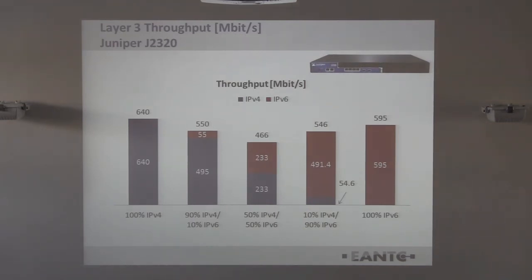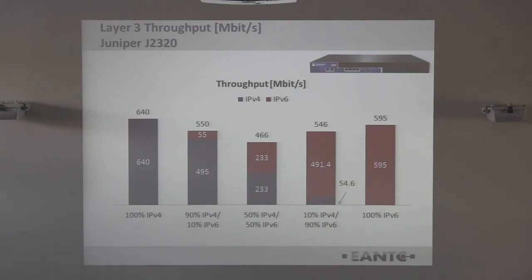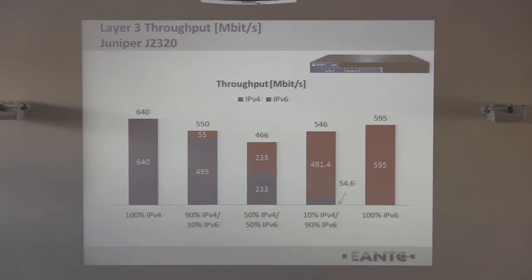Juniper behaved differently. The difference between 100% IPv6 and 100% IPv4 was not very dramatic, and performance remained above the vendor's 400 Mbps rating throughout. The lowest performance was observed at the 50/50 mix, but it was still above what the vendor promised. The traffic used was UDP, connectionless layer 3, with changing port pairs and addresses.